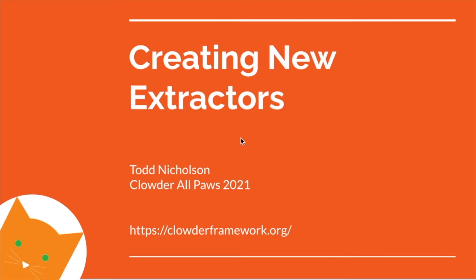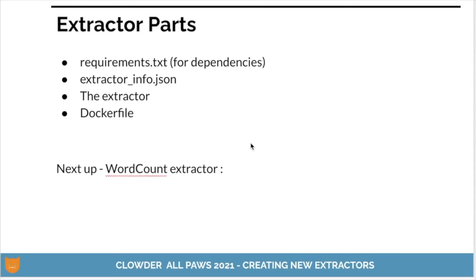This presentation is going to show you how to create new extractors based on looking at some extractors that already exist as examples. With any extractor, there are certain files you're going to need to write. This is basically the requirements: you're going to have a requirements.txt that handles the dependencies, an extractor_info.json, the actual extractor itself, and then there's going to be the Dockerfile. As we look at examples, what's contained in each of these will become more clear.